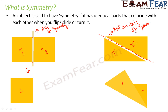The word symmetry is derived from a Greek word which means 'to measure together.' Measuring together means the object has identical parts, and all of those identical parts taken together form that particular object. Like in the first case, the rectangle is actually made up of identical parts one and two, and these two identical parts when measured together form the rectangle. That is why the name symmetry.